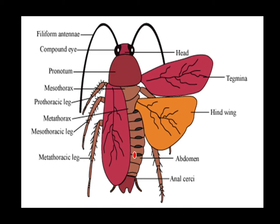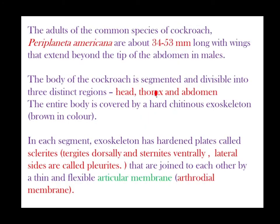The abdomen region — so head, thorax, abdomen. The legs are: prothoracic leg, mesothoracic leg, and metathoracic leg. In each segment, the exoskeleton has a hardened plate called a sclerite — tergite dorsally and sternite ventrally.